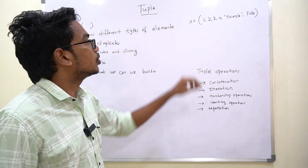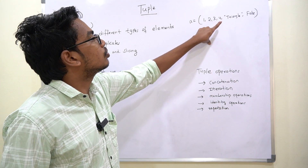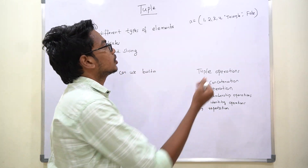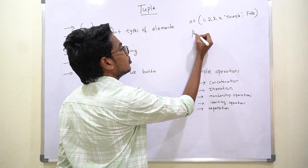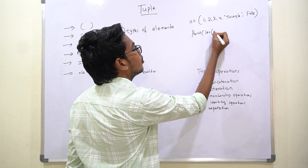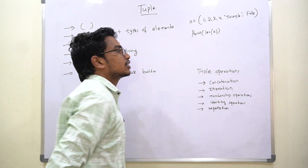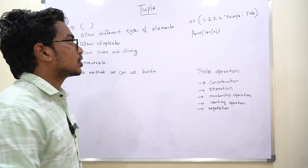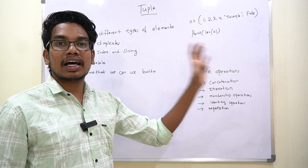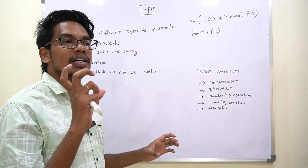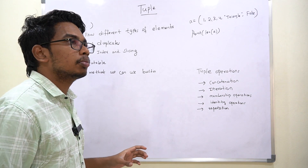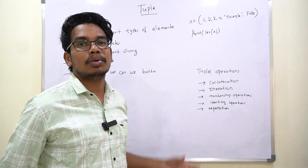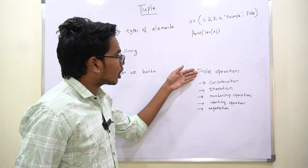For example, if you want to check the length of a tuple with elements 1, 2, 3, 4, 5, 6 — you can use print(len(a)) to check the length of the tuple. You can also perform tuple operations.